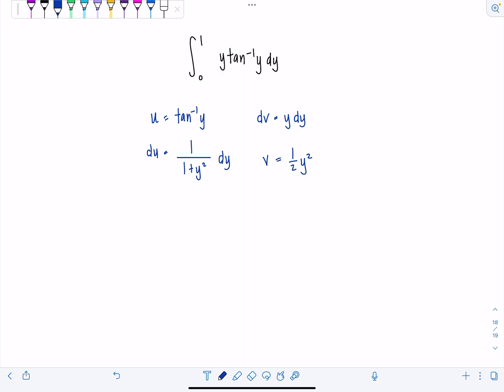So now we can rewrite this integral, definite integral, as u times v, so that would be, I'm going to put 1 half y squared in the front, doesn't that look better, times tan inverse of y.